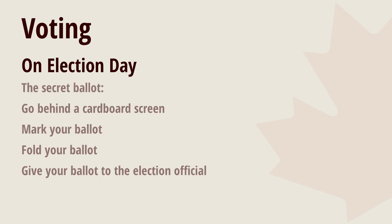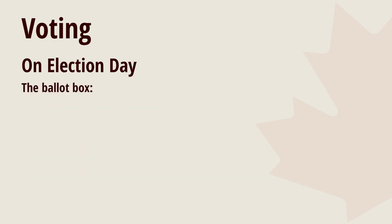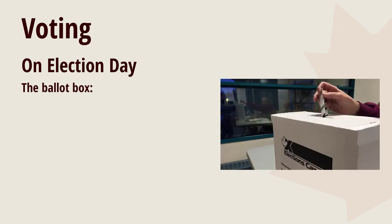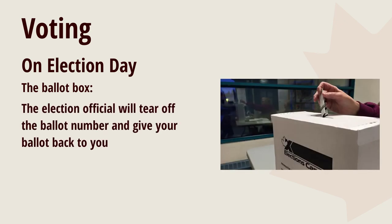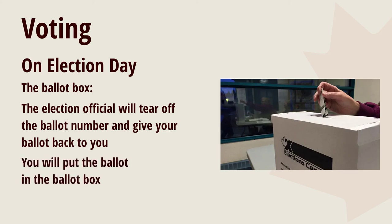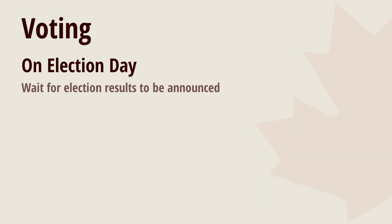Number seven is about the ballot box: the poll official will tear off the ballot number and give you your ballot back so you can put it in the ballot box, and then you're done. Number eight, you can go home and check for the election results to come in. Every ballot is counted and the results are made public as soon as all the polls across Canada are closed.